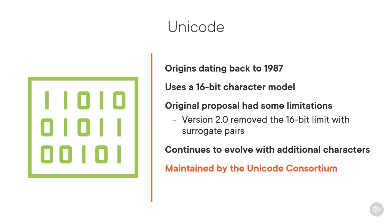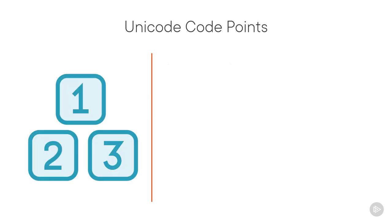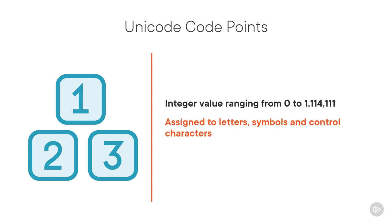The Unicode consortium maintains Unicode, and as of version 13, the Unicode standard contains 143,859 characters, although this standard defines over 1 million possible code points. A code point is an integer value ranging from 0 through to 1,114,111. Code points are assigned to letters, symbols, emojis, and control characters. Many available code points are not yet assigned and are reserved for future use.